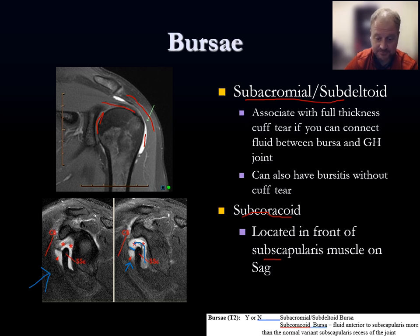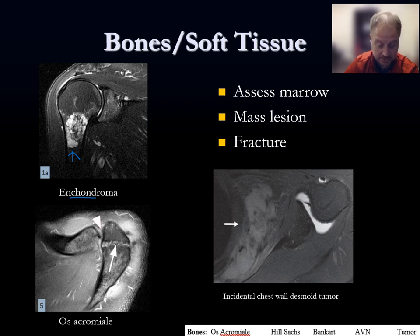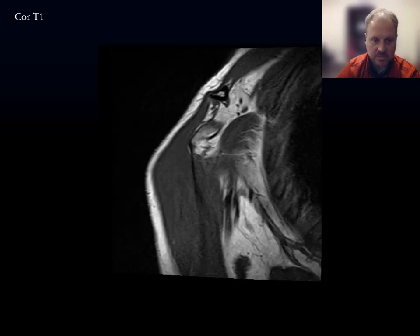Near the end of the study, do a run-through of bones and soft tissues on fluid-sensitive images to make sure nothing has been missed. Look for anatomic variants, bone lesions — such as an enchondroma with T2 hyperintensity, or an os acromiale with its synchondrosis — and incidental findings like chest wall lesions. Always look at the edges of the images for masses, fractures, and marrow signal abnormalities. Using the reading pattern checklist should allow you to hit the ground running in the bone room on shoulder MRI.